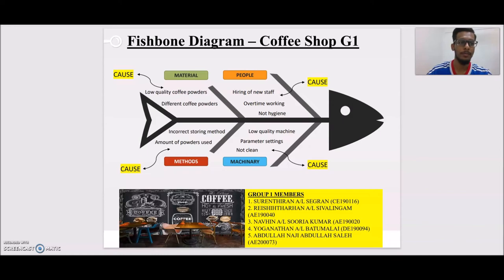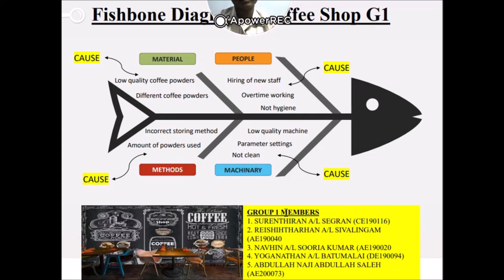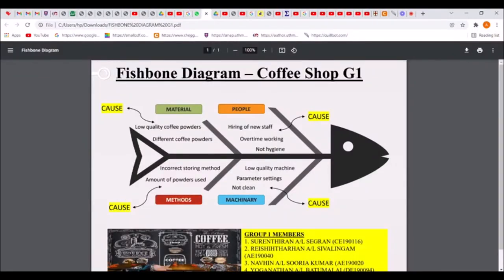Hello, my name is Yoganathan, metric number DE190094. I'm going to present about the causes related to machinery. There are three causes. The first is low quality machines — low quality machines will not be able to complete the coffee-making procedure properly. The second is parameter setting — the coffee machine should be set to the right parameters, for example the sugar level, brew level, strength, and hot water level, in order to make a better coffee.